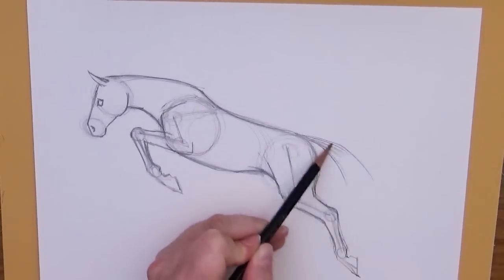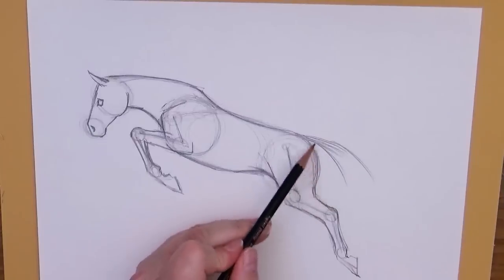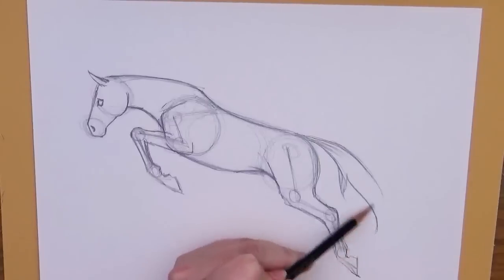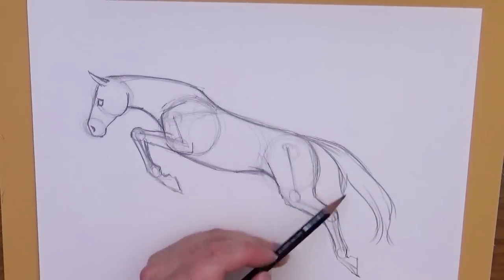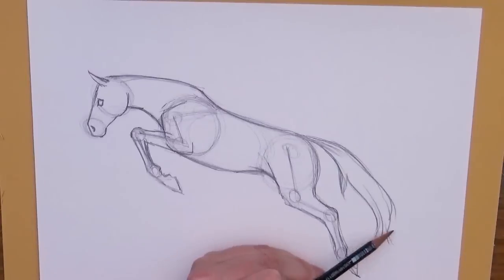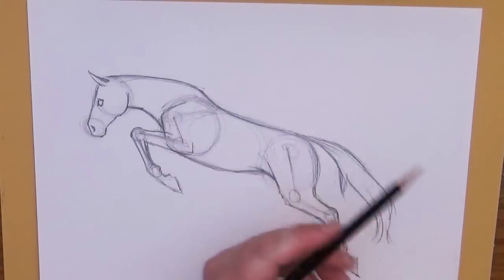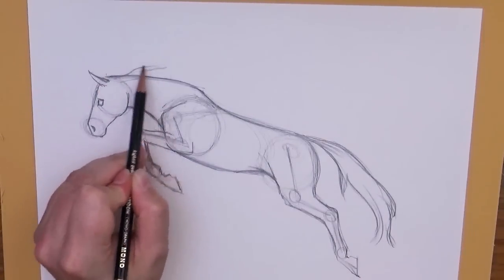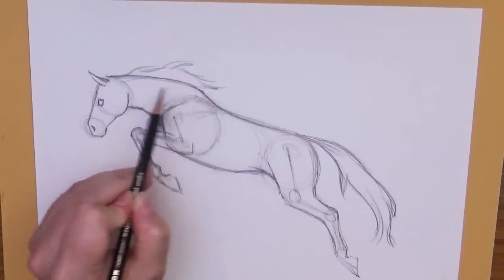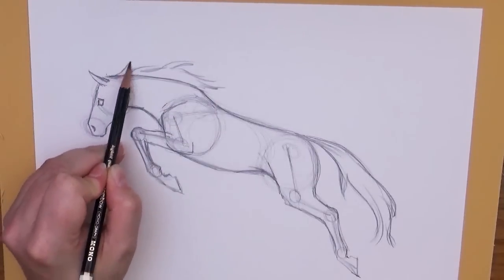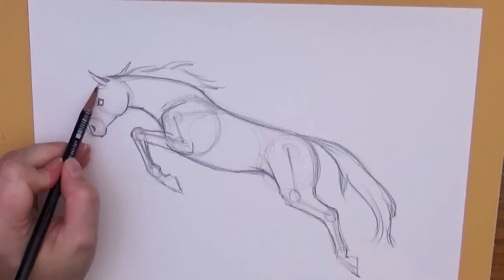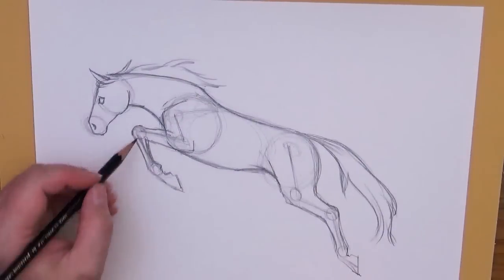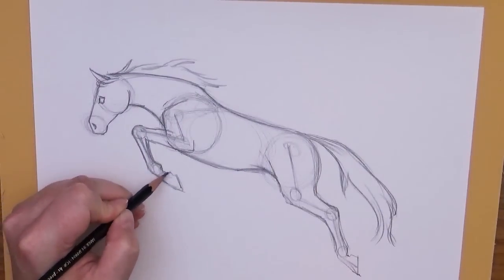When I draw any tails or manes, I don't draw individual hair. I draw the shape of the mass of the hair. I might draw it with several different lines, but you'll see that mainly it's the overall shape of the hair. Same thing with his mane. What would it be doing? It was launching up. So there we go, we have our horse, nice stride there.